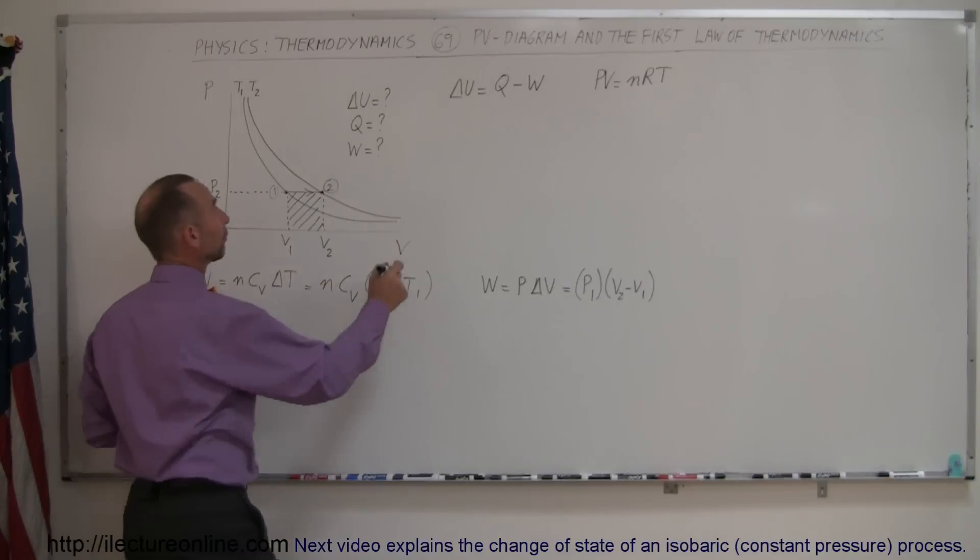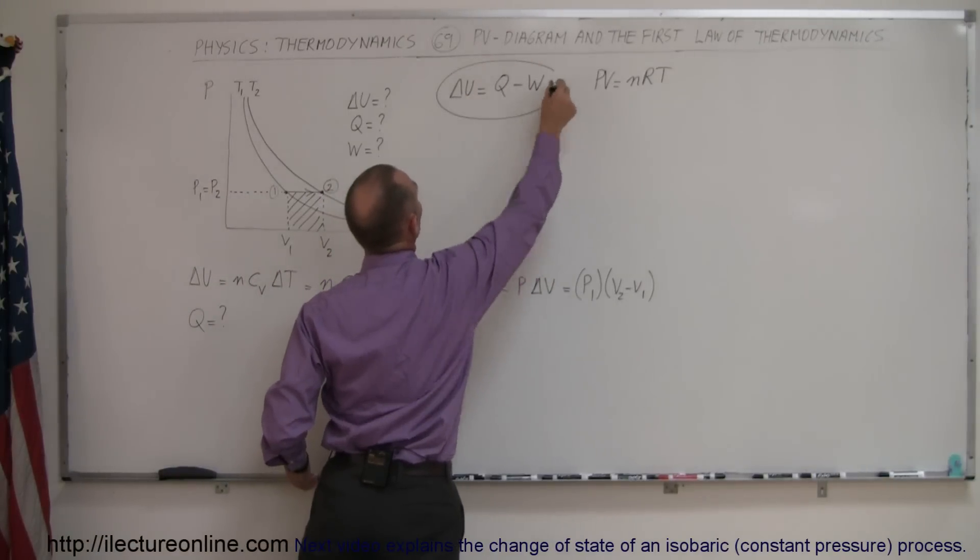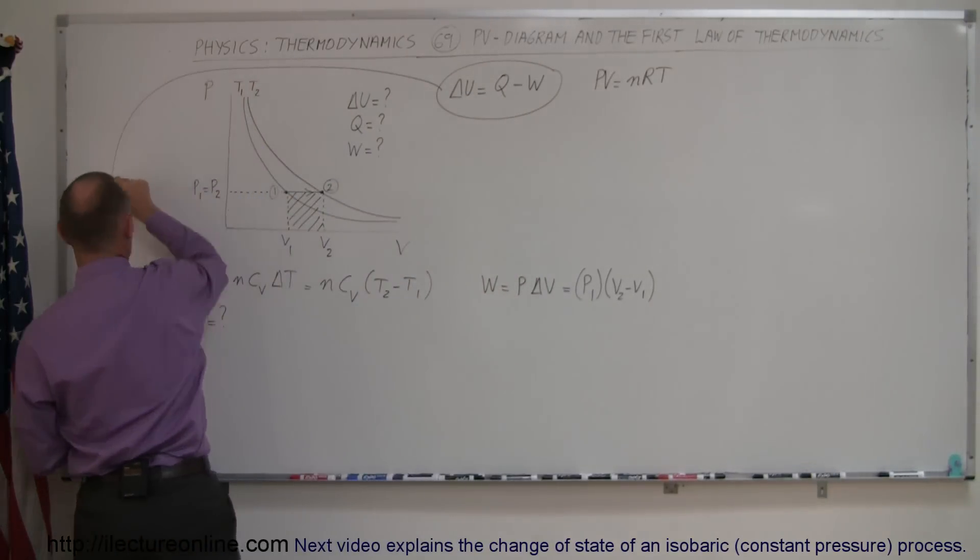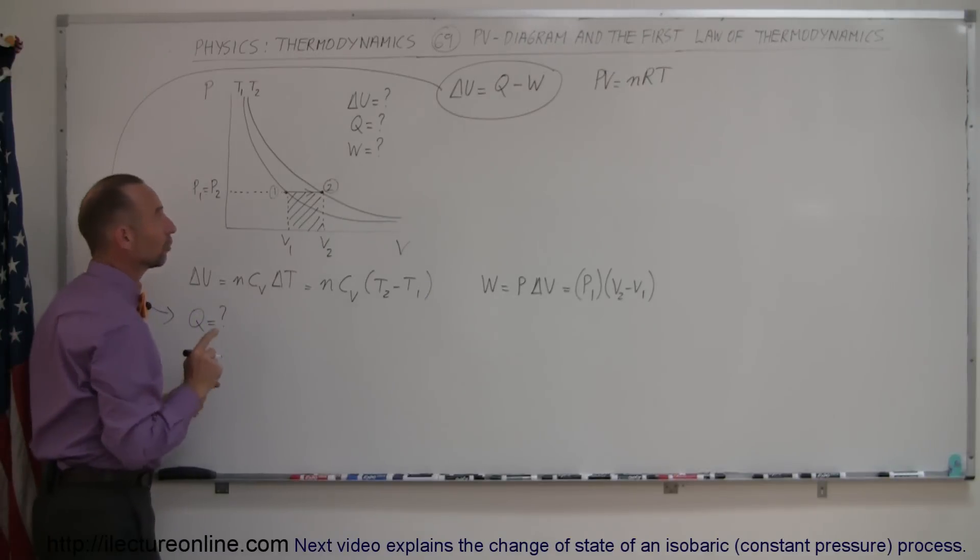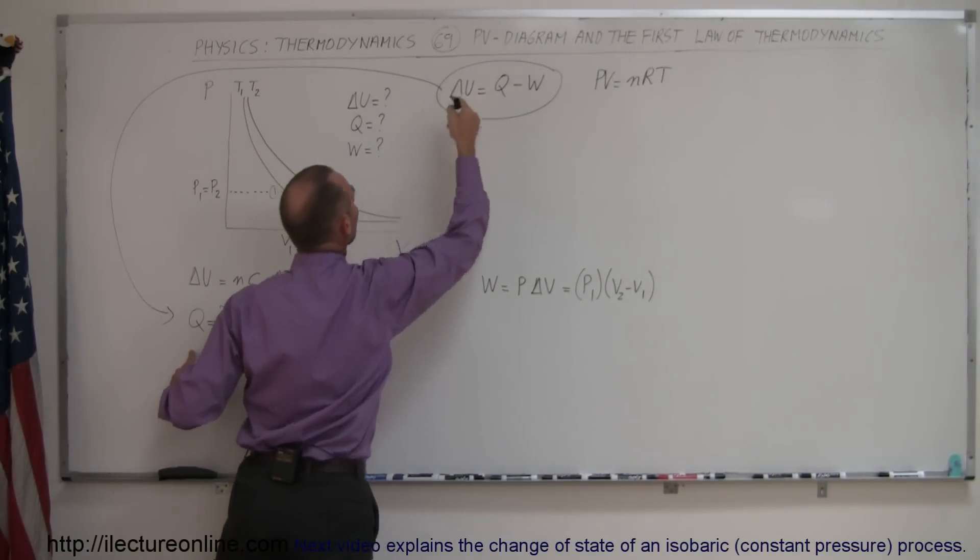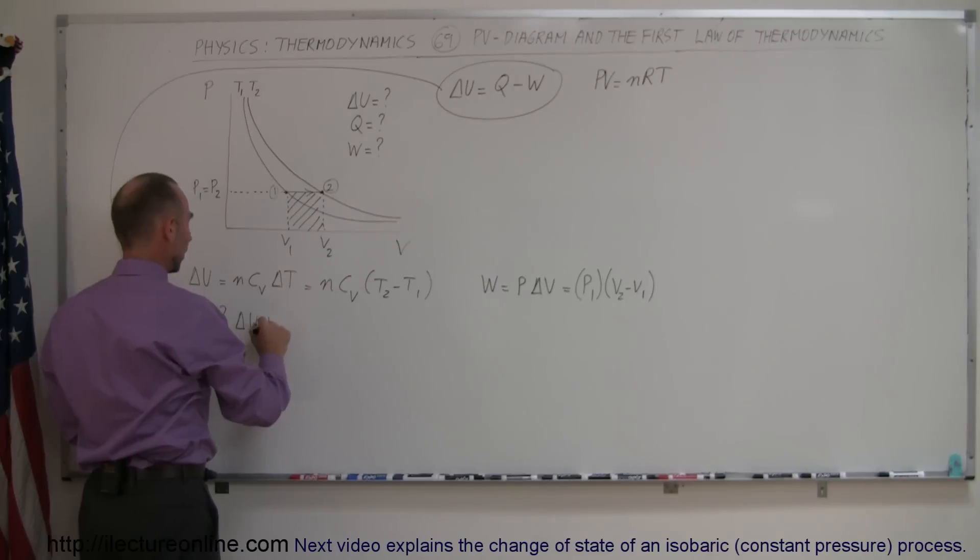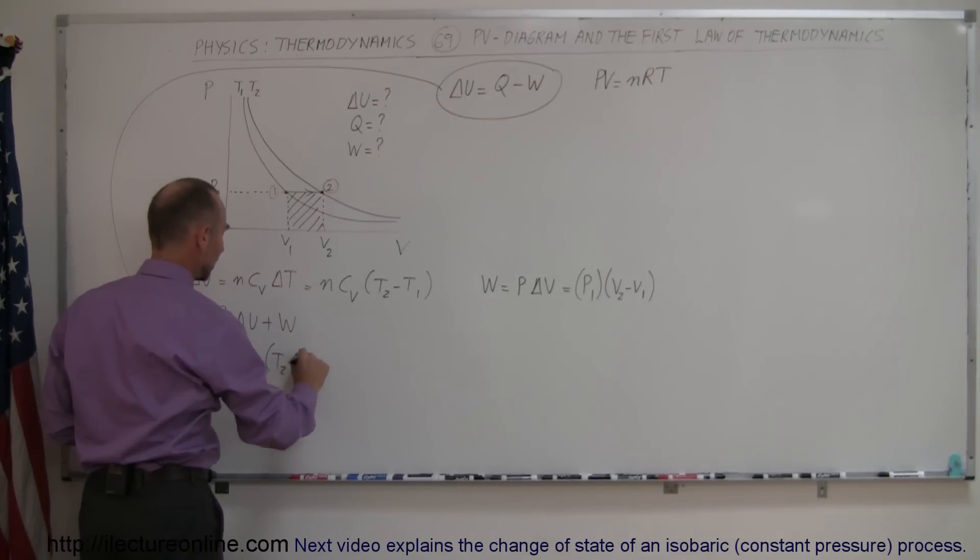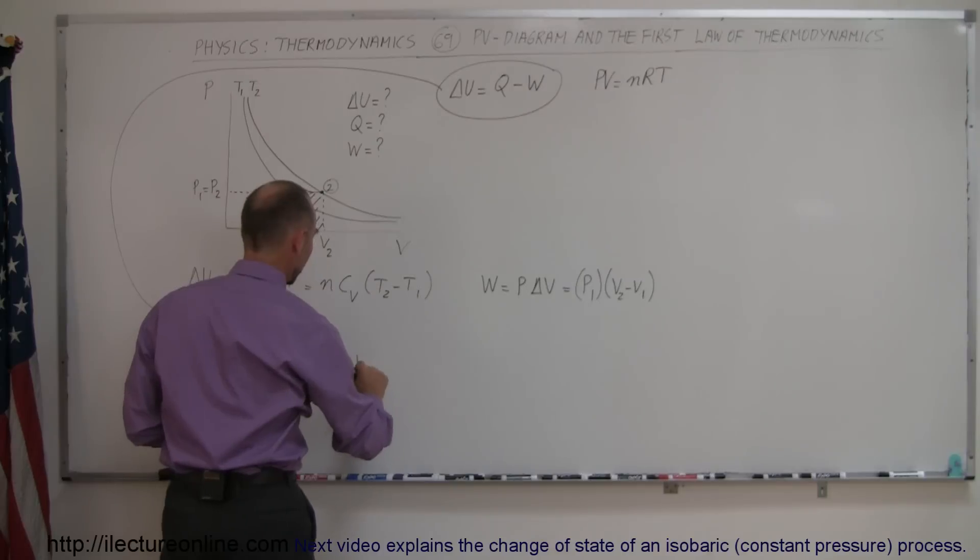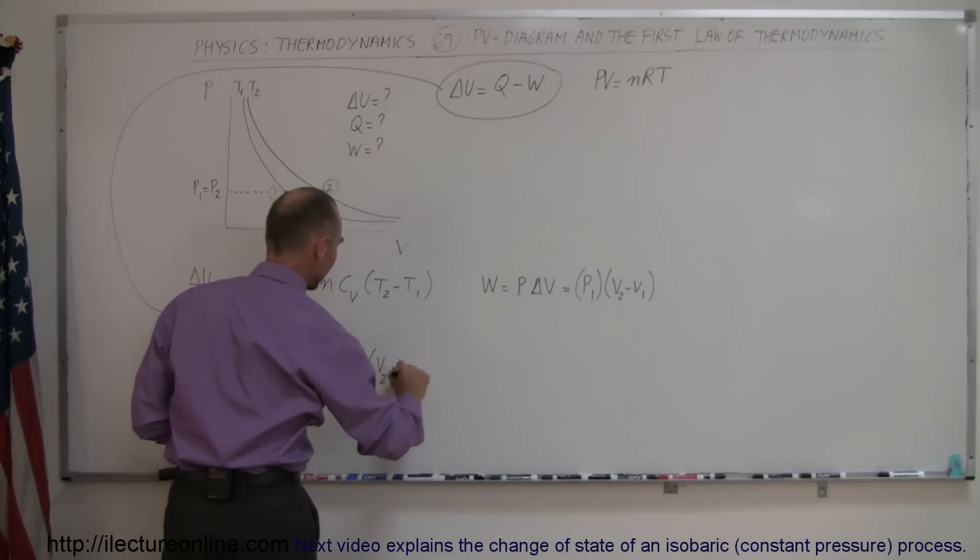Alright, and finally we can apply the first law of thermodynamics to find Q. So now we use this over here to find Q, because we can see that since delta U equals Q minus W, we can see that Q is equal to delta U plus W by moving the W over to the other side. So this is equal to delta U plus W. Now delta U we calculate right here, which is nC sub V times T2 minus T1, and we then add to that the work done, which is P1 times V2 minus V1.